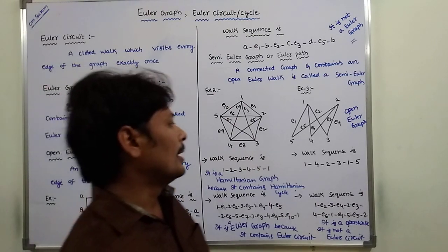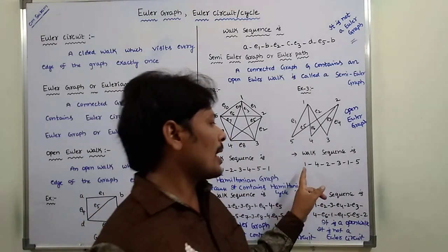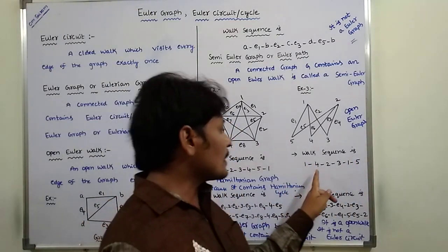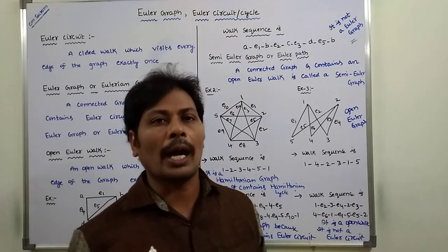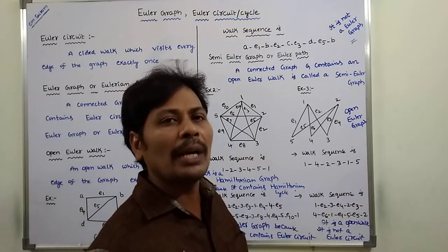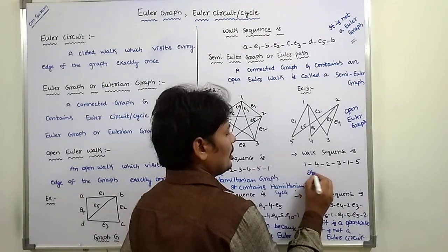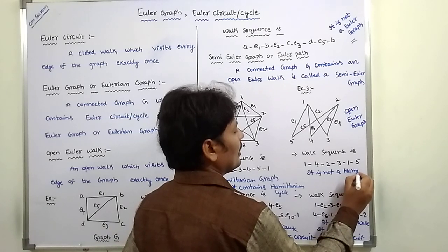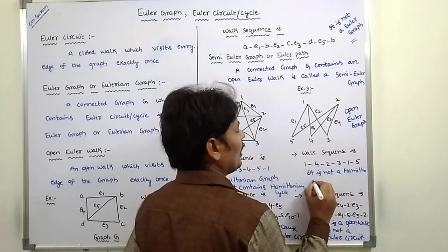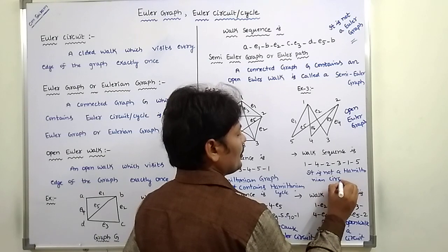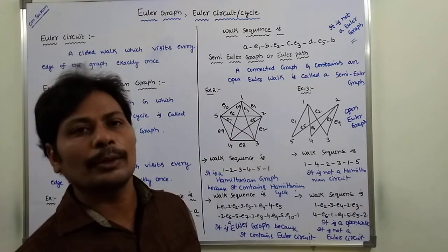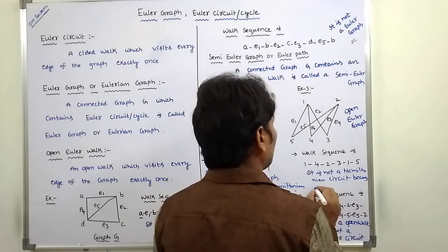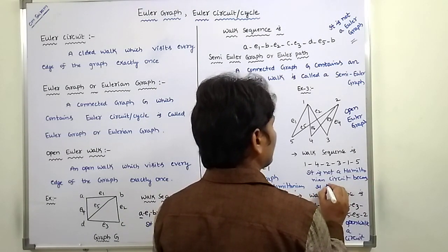Hamiltonian cycle. Now consider walk sequence 1, 4, 2, 3, 1, 5. It is not a closed walk, so it is not a Hamiltonian circuit.